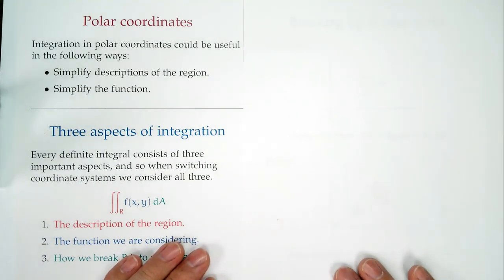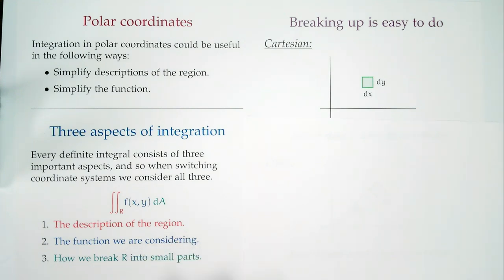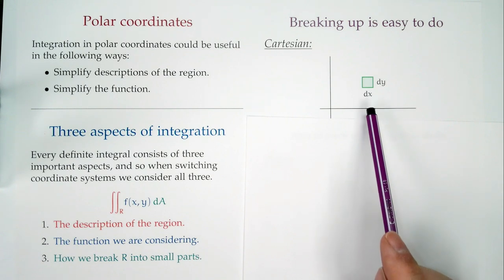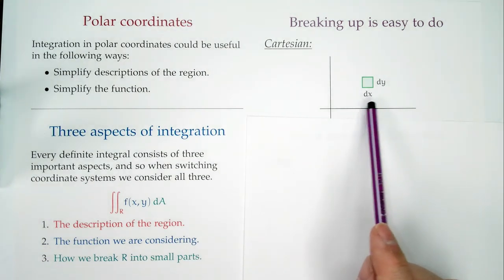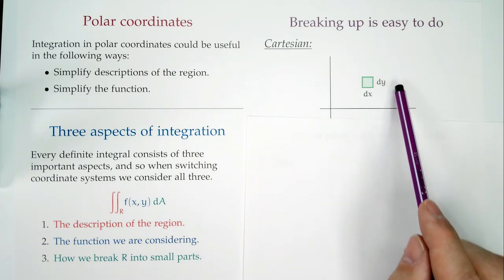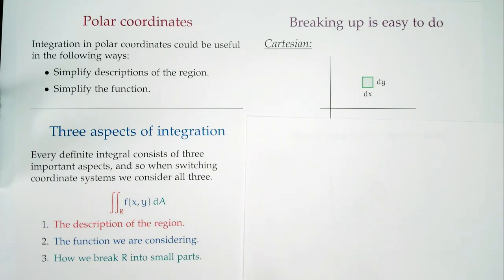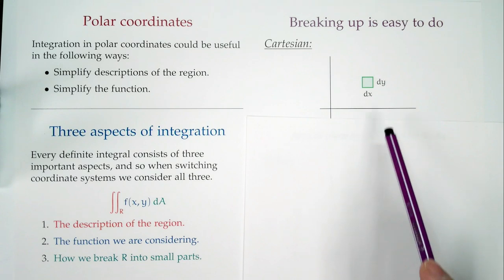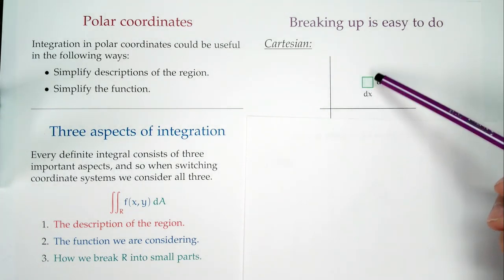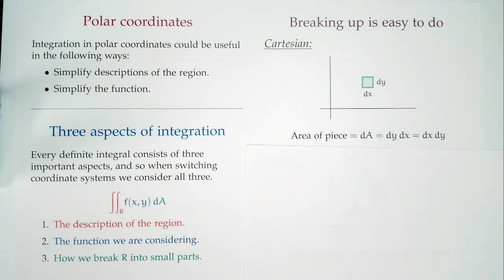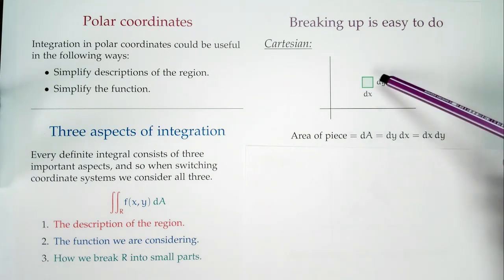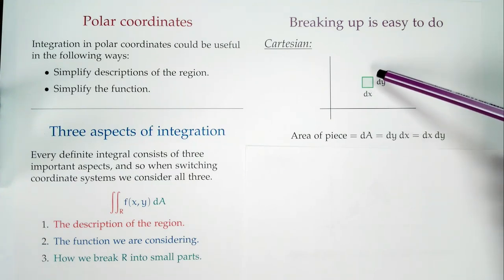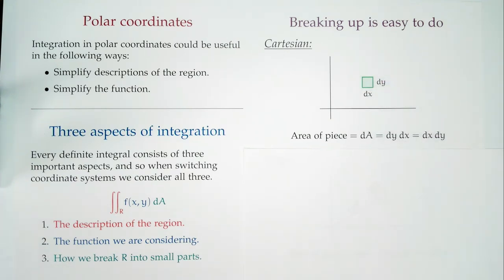Let's talk about breaking things into small parts, starting with Cartesian. We perturb our coordinates x and y. Perturbing x moves a little in the x-direction; perturbing y moves a little in the y-direction. When you perturb both, you form a little tiny rectangle. The area of that piece is dA = dy·dx — length times width of a rectangle.